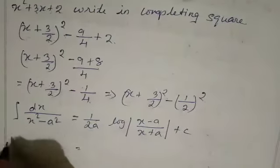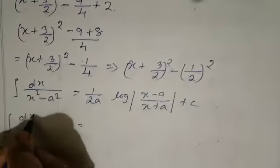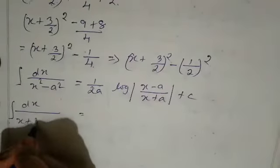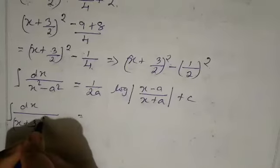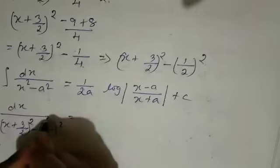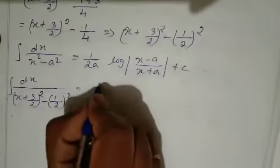So we can use this formula. Now integration of dx divided by, instead of x we have x plus 3 by 2 whole square, minus instead of a, just write 1 by 2 whole square.